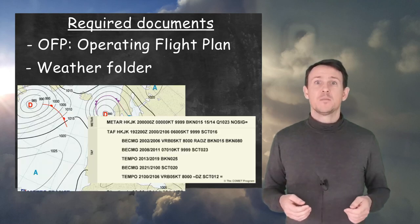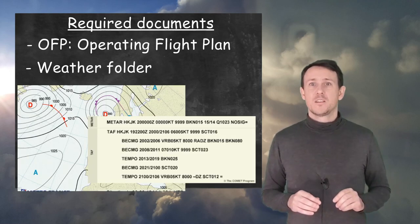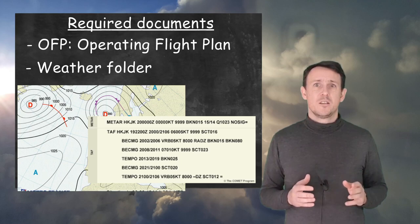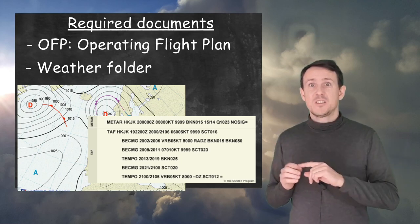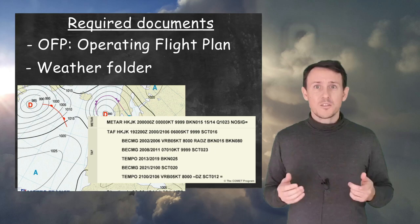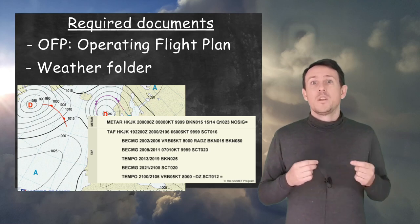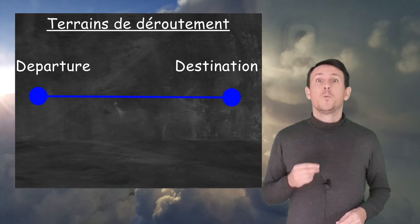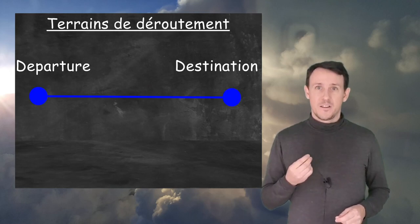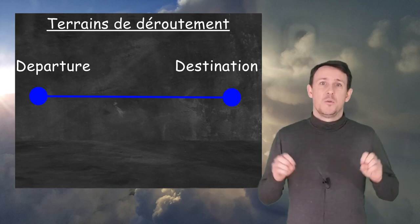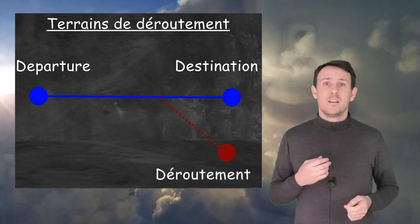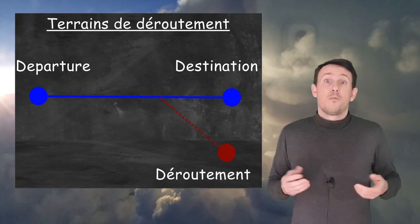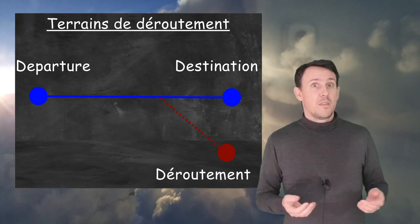With the OFP comes the full weather folder. In this one, we will pay particular attention to the forecast at departure, destination, and in between, but also of alternate airfields which have been selected already. Alternate airfields are actually rescue airfields — they could be used, for instance, in case the main airfield would not be available for any reason, like bad weather.